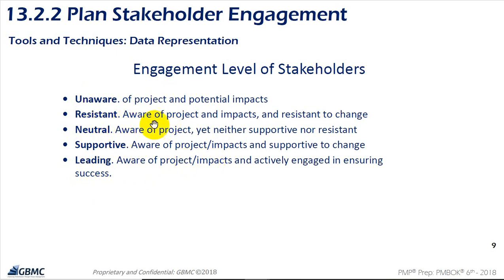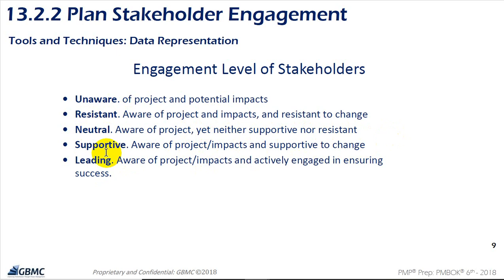A stakeholder can be resistant — meaning they are aware of the project and its potential impact but resistant to it. They can be neutral — aware of the project yet neither supportive nor resistant. They know the project but it doesn't affect them, so they have neither support nor opposition.